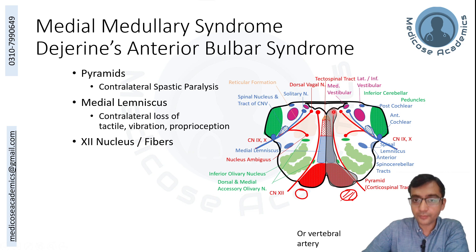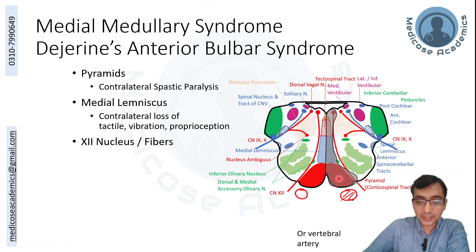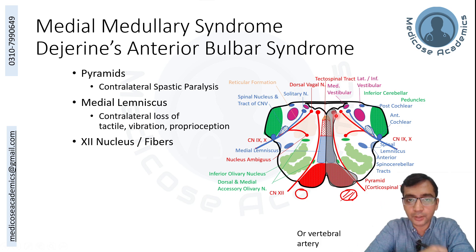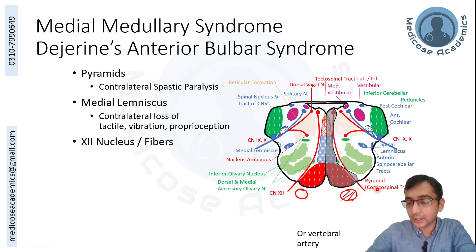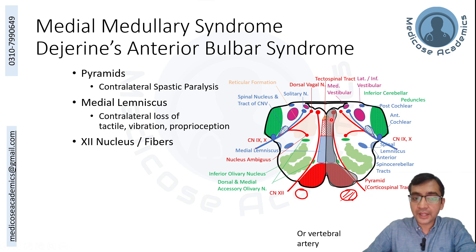Last but not least is the twelfth cranial nerve nucleus — the hypoglossal nucleus — which supplies the tongue. This is a lower motor neuron. To determine if it is upper or lower motor neuron, ask: is this the last neuron on the way to the muscle? The hypoglossal nucleus axons go directly to make neuromuscular junctions with tongue muscles without crossing the midline, so there will be flaccid paralysis of the same-sided tongue.